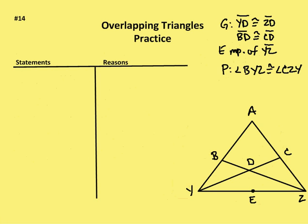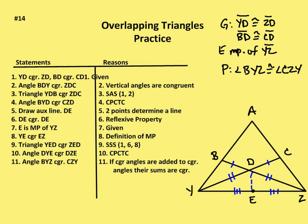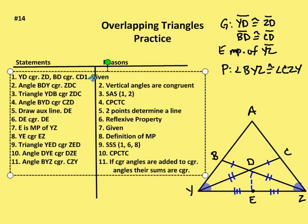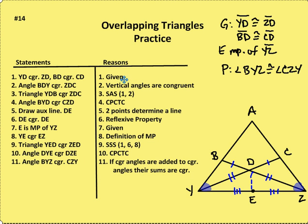Last problem for overlapping triangles. I have YD congruent to ZD, BD congruent to CD, and E is the midpoint of YZ. I want to prove that angle BYZ is congruent to angle CZY. I've marked up the diagram: YD and ZD with double tick marks, BD and CD marked as congruent. E is shown as a midpoint, so YE is congruent to EZ. That's given.